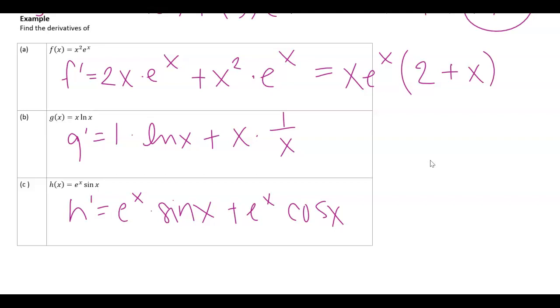So if I needed to find horizontal tangents, find zeros of the derivative, you might need to do some algebraic manipulation in order to do that. Here I get natural log of x plus one. I could try to figure out when that's equal to zero as well. Here I could factor out an e to the x if I needed to.